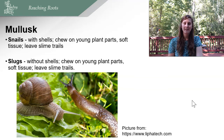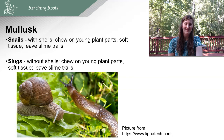Mollusks such as snails and slugs can also cause severe plant damage. Snails have shells and chew on young plant parts and soft tissues, leaving a slime trail. Slugs do not have a shell, but also chew on young plant parts and soft tissues, and also leave a slime trail.